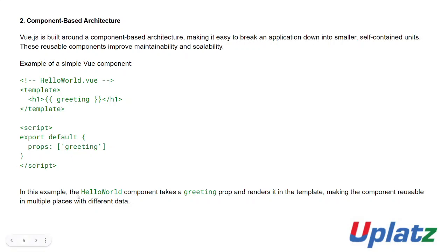In this example, the HelloWorld component takes a greeting prop — prop means property — from the outside. Suppose you pass one greeting value, the message will be placed like that. The greeting prop is rendered in the template, making the component reusable in multiple places with different data.